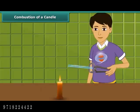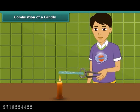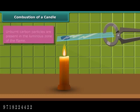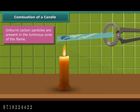Let us watch Rohan performing an activity. He is introducing a glass plate into the luminous zone of the candle flame with the help of a pair of tongs. The glass forms circular blackish spots, indicating the presence of unburnt carbon particles present in the luminous zone of the flame.